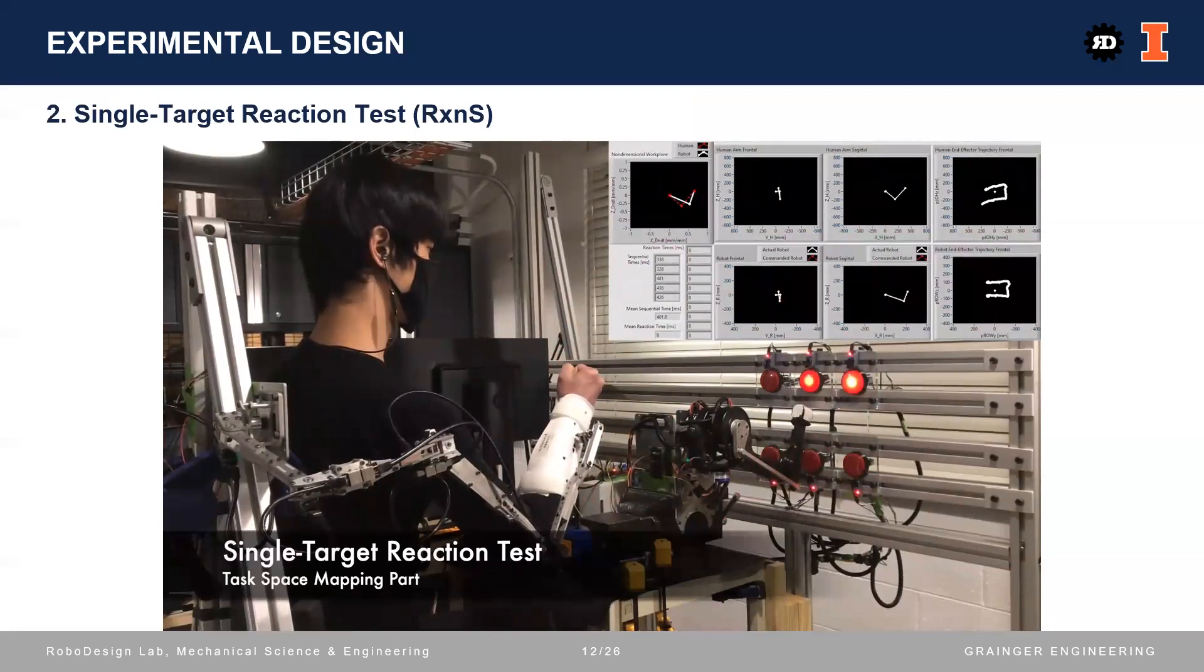In a trial of single-target reaction test, the top middle target lights up at a random time between 0.5 and one second, and the subject will teleoperate the robot to hit the target as fast as possible after it lights up. The subject also knows that only the top middle target will light, and the trial contains 10 hits, hence 10 reaction times.